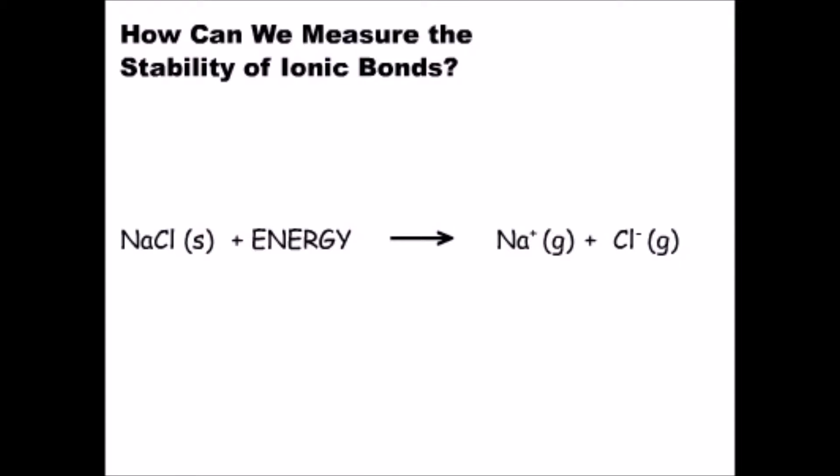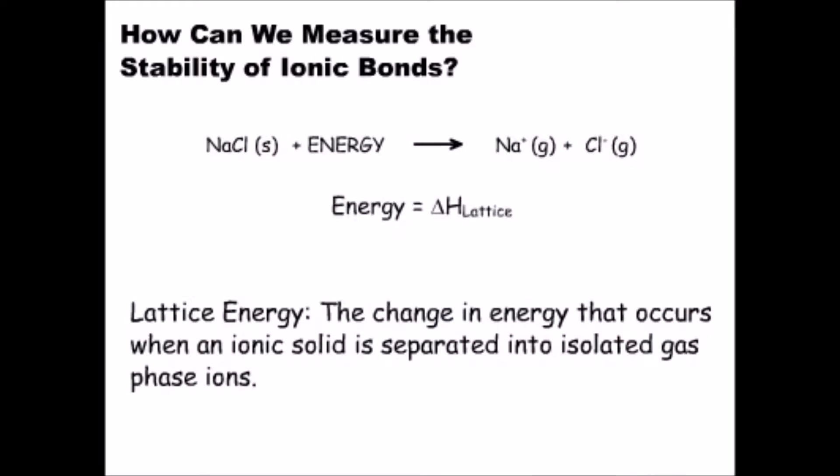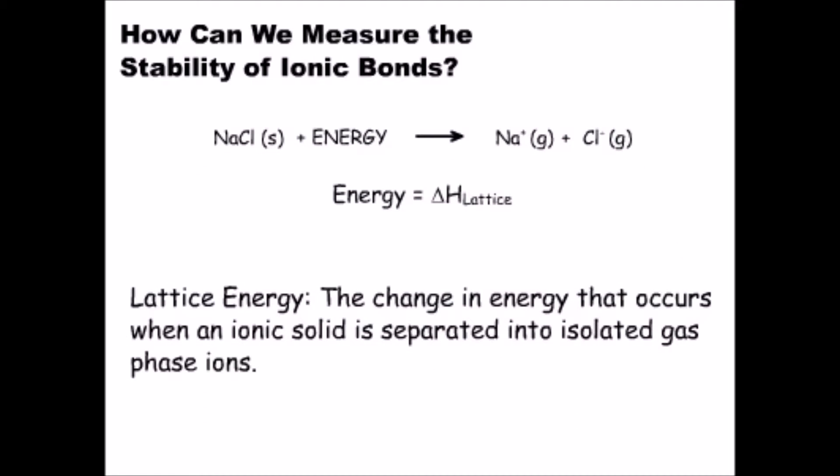The energy of this reaction has a special name. The lattice energy is the change in energy that occurs when an ionic solid is separated into isolated gas phase ions. We can write its symbol as delta H sub L.